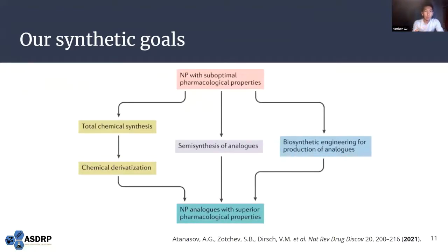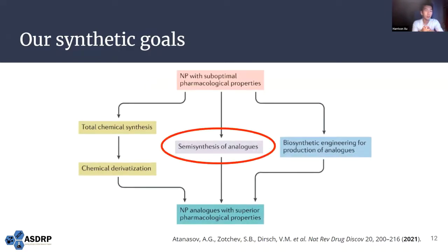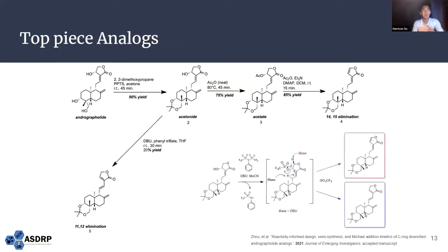For any natural product there are three approaches: total chemical synthesis from industrially available starting materials, biosynthetic engineering of bacteria or other species, or semi-synthesis — taking the natural product and editing it with specific reactions. We chose semi-synthesis, taking andrographolide and creating different analogs, specifically top-piece analogs that edit the C-ring butenolide.